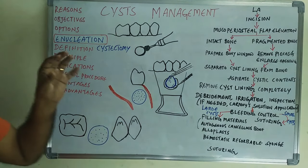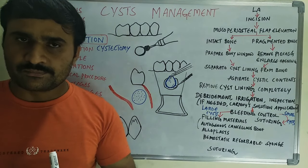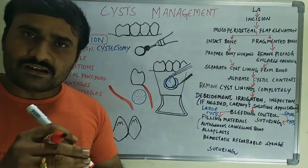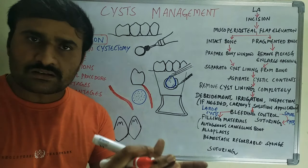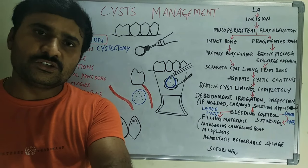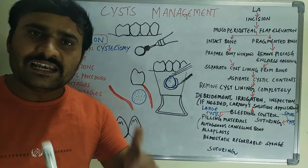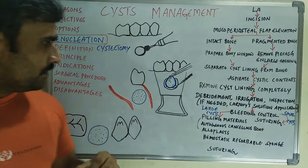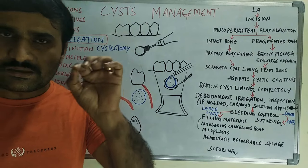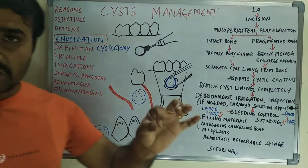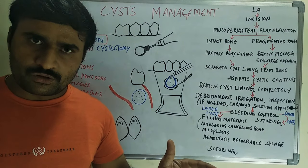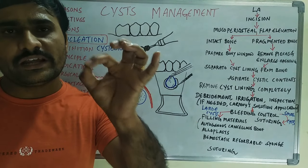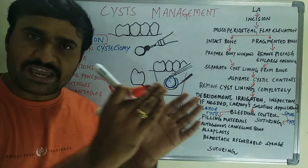The principle behind enucleation is that after completely removing the cyst lining and suturing, in the defect area a blood clot will form. That blood clot will organize into bone, resulting in an early return to normal activities. This is the principle behind enucleation.